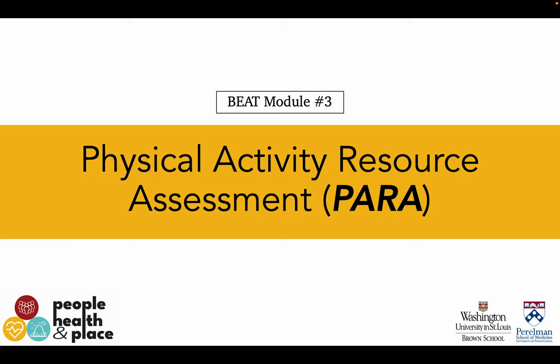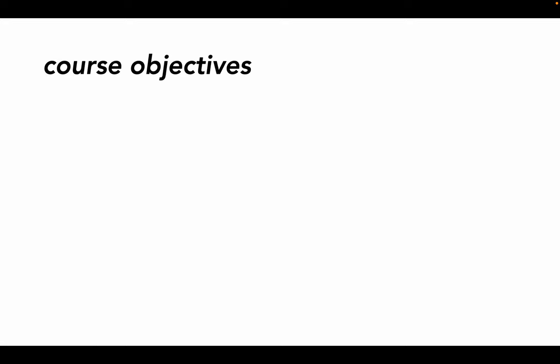Welcome to the third module for Built Environment Assessment Training. In this module, we're talking about the Physical Activity Resource Assessment, or PARA. PARA is used to examine the availability, accessibility, safety, and quality of physical activity resources in an urban area.